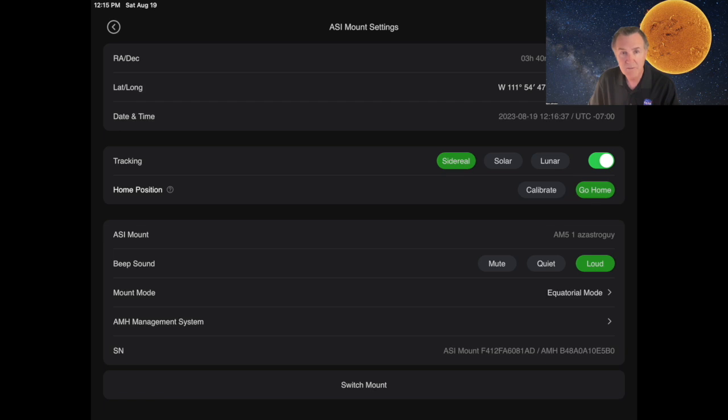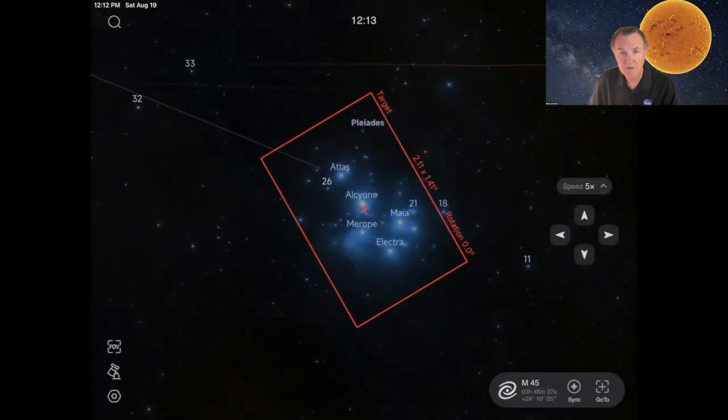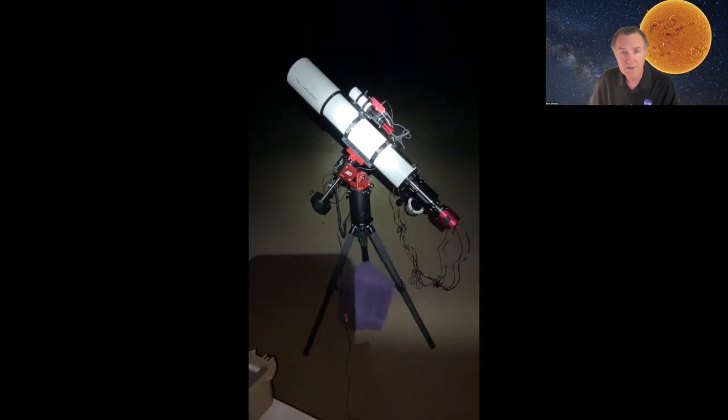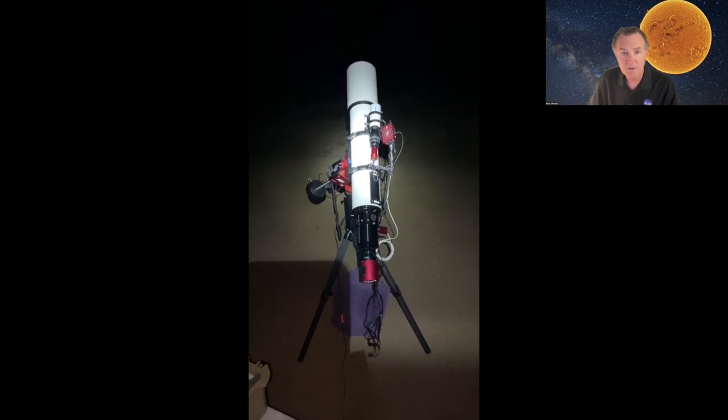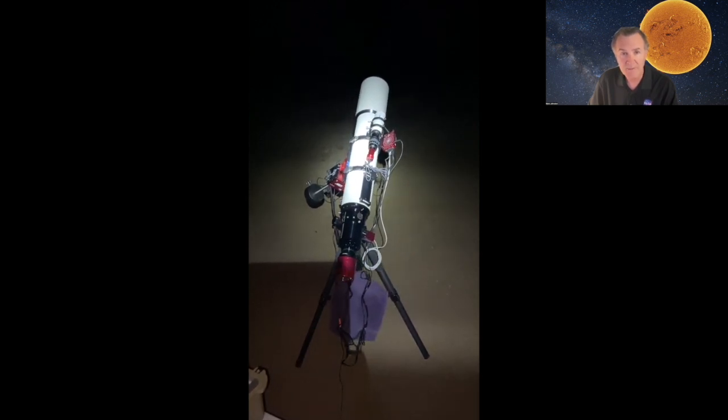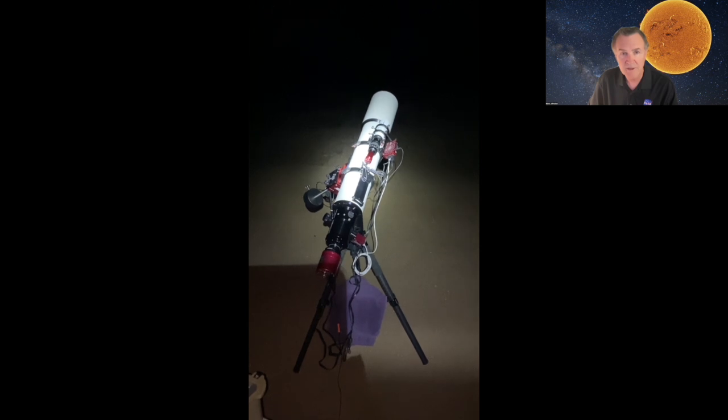The app that is available for the mount is fairly basic. It allows you to select the tracking type: sidereal, solar, or lunar, which I use all the time. It's also got a huge database of objects. Once you're polar aligned, you can tap on and go to almost anything you want. In practice though, most people are going to be using the ASI Air or some other controller. There are other YouTube tutorials that go into much more detail on this app, so I'm not going to duplicate that here.